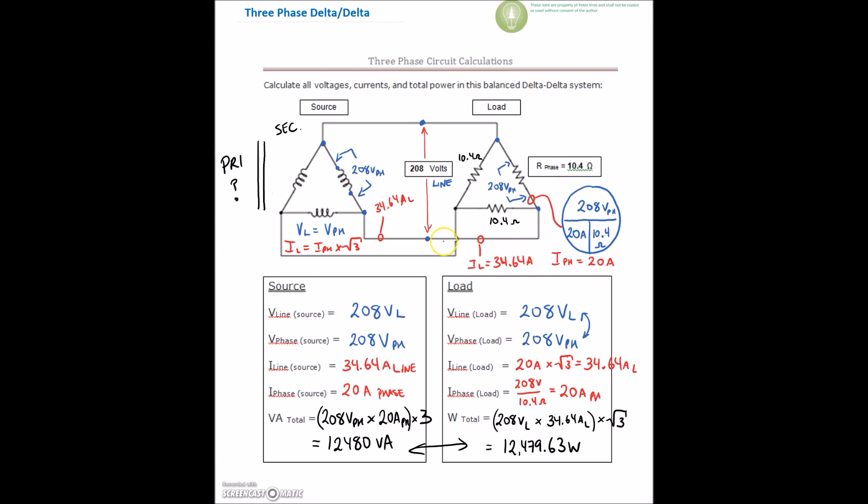So we take 20 amps times root 3, and it gives us 34.64. That current is flowing on this line right here. So we have 34.64 on the line. And on the inside, this winding right here and this winding are both providing 20 amps, just 120 degrees at a phase, to provide us with that 34.64 amps on the line.